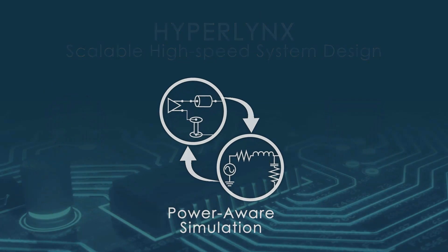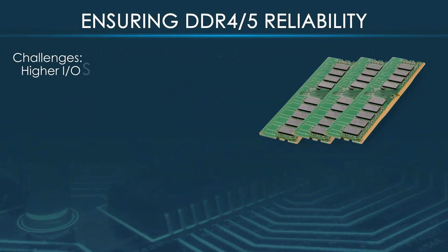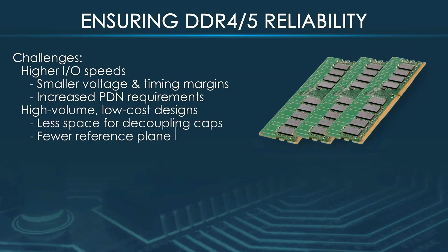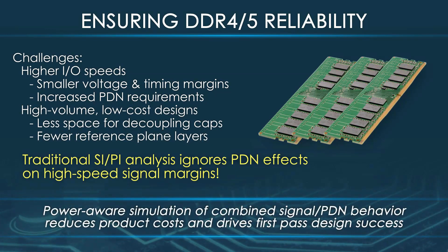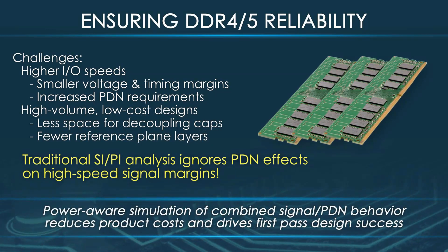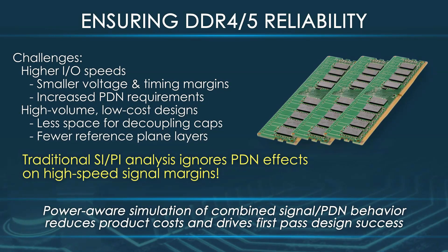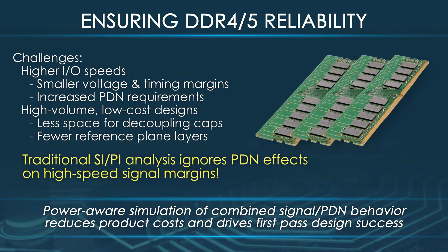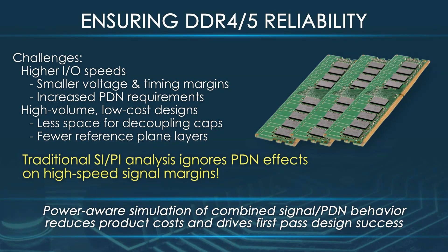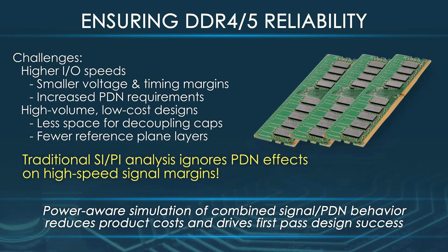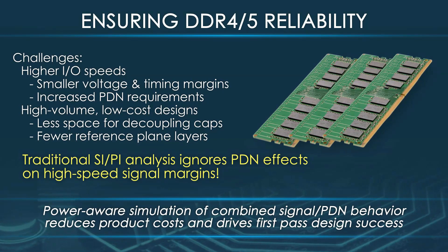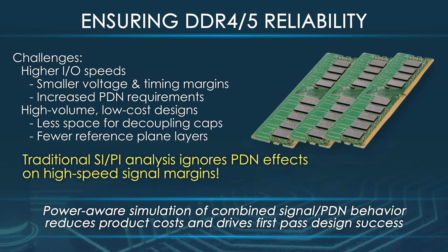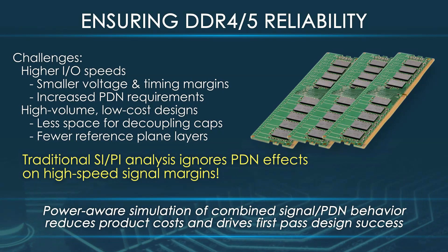The challenges with today's high-speed PCB designs are that as the speed of the signals get faster, the voltage and timing margins start to shrink. Other challenges are that the PDN needs to be well designed to deliver power to the chip effectively, but the space on the PCB is shrinking and fewer reference layers are available to cut cost. Historically, SI and PI simulations are done separately and interaction between the signals and the PDN were ignored. But we can no longer ignore these effects, as unwanted interactions between data signals and the PDN can result in intermittent data errors that cause systems to crash.